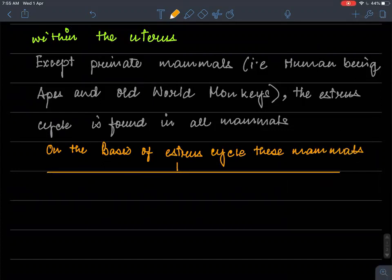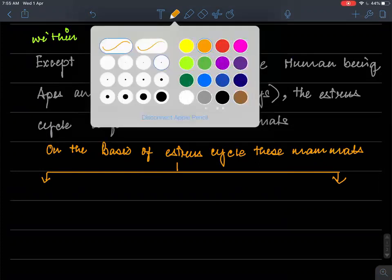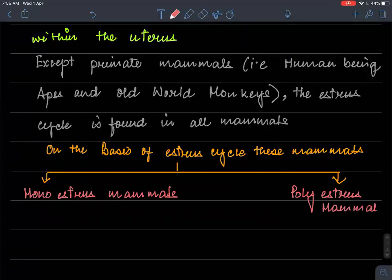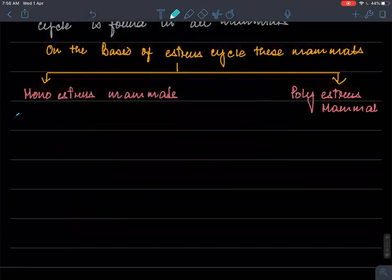One is monoestrus mammal and the other one is polyestrus mammal. Monoestrus mammal will have this cycle only once in breeding season, whereas the polyestrus mammals will have it more than one in the breeding season. So in case of monoestrus mammals, there is only one cycle, only one cycle in breeding season.